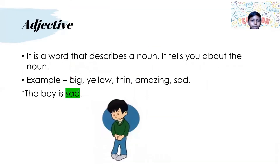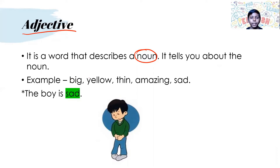Adjective. It is a word that describes the noun — it tells you more about the noun. Examples: big, yellow, thin, amazing, sad. Example: 'The boy is sad.' It tells you how the boy is.